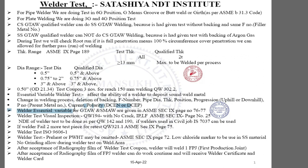Current is also an essential variable — normally we weld with DC current, but in aluminum welding AC current is used. Polarity is also essential: DC EN (direct current electrode negative) is used in GTAW welding, and DC EP (direct current electrode positive) is used in SMAW welding.